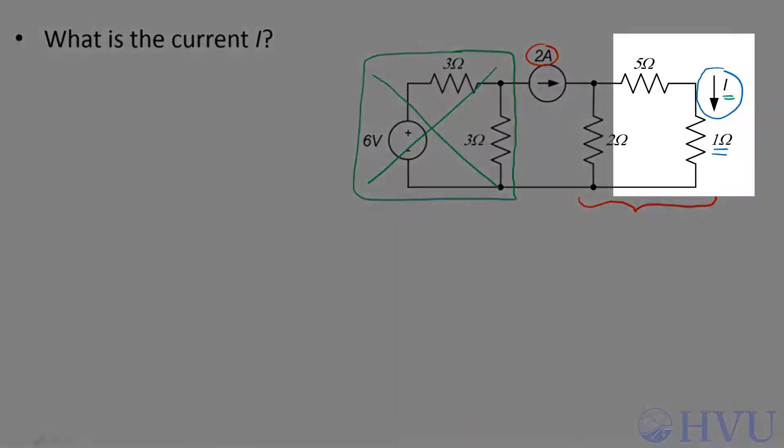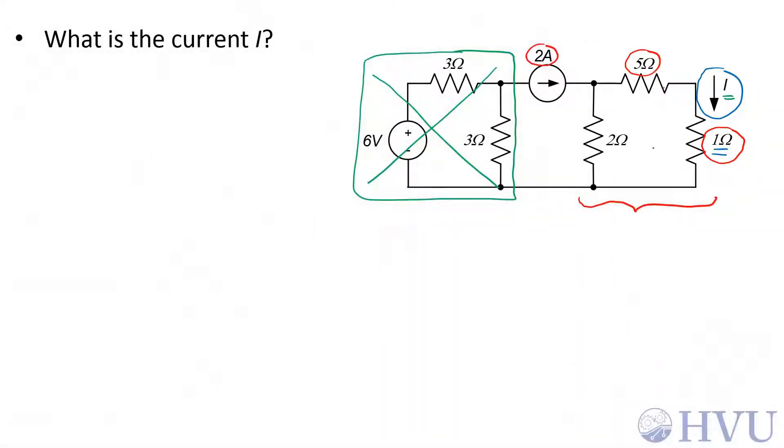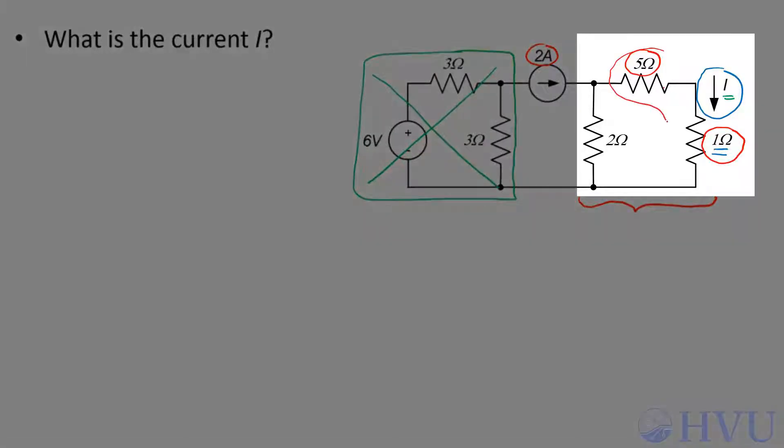The next thing to notice is that this 5 ohm and this 1 ohm resistor are in series. If I combine those in series, then I have a parallel combination of an equivalent resistance of these two with this 2 ohm resistor.